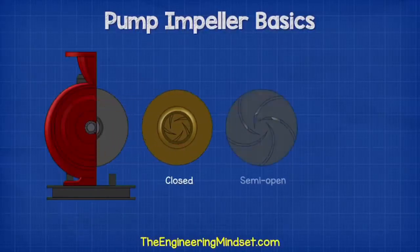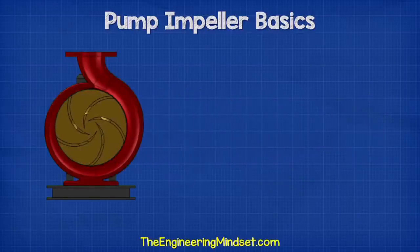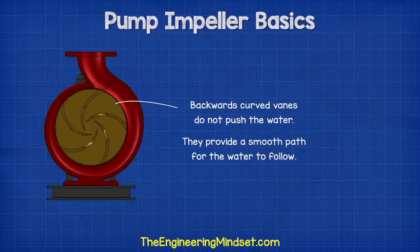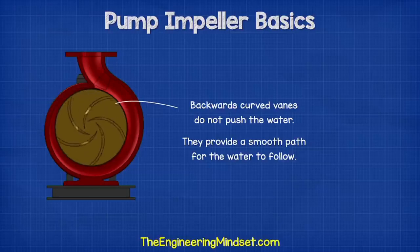There are many types of impeller, but most will have these backward curved vanes which will either be open, semi-open, or closed with some shrouds. These backward curved vanes do not push the water. The curves rotate with the outer edge moving in the direction of the expanding volute. These vanes will provide the fluid with a smooth path for the water to flow, as we'll see a little later in this video.